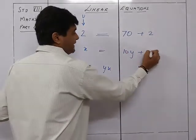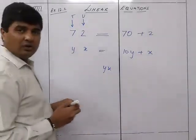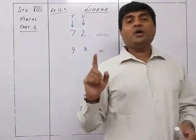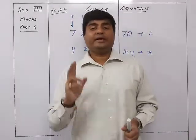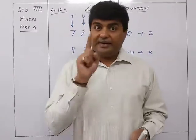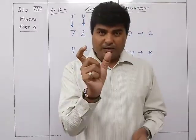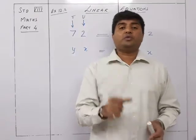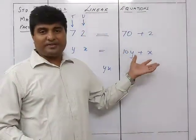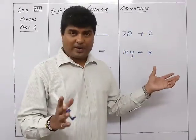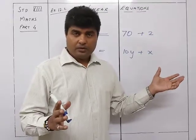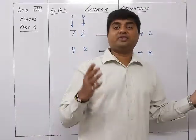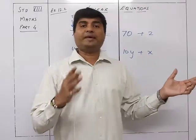Remember this: whenever you are writing any two-digit number, the number will always be 10x plus y or 10y plus x, depending on what is x and what is y. If the tens place is x, it will be 10x plus y; if the tens place is y, it will be 10y plus x.